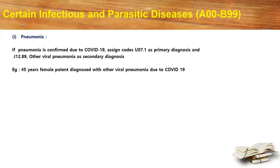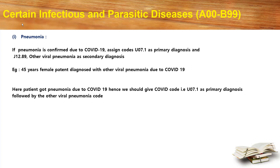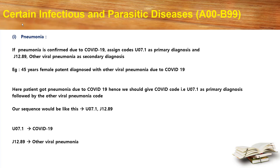Let's look at an example. A 45-year-old female patient is diagnosed with other viral pneumonia due to COVID-19. Here the patient got pneumonia due to the COVID-19 virus. Hence we should give the COVID-19 code as primary diagnosis followed by the other viral pneumonia code. The sequence would be U07.1 and J12.89. U07.1 is COVID-19 and J12.89 is other viral pneumonia.